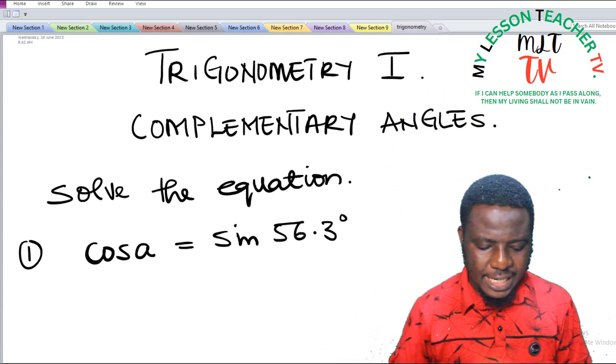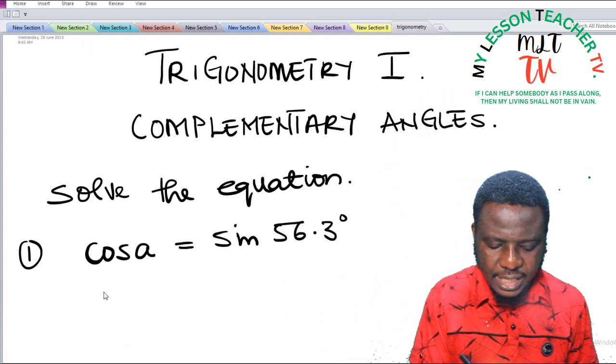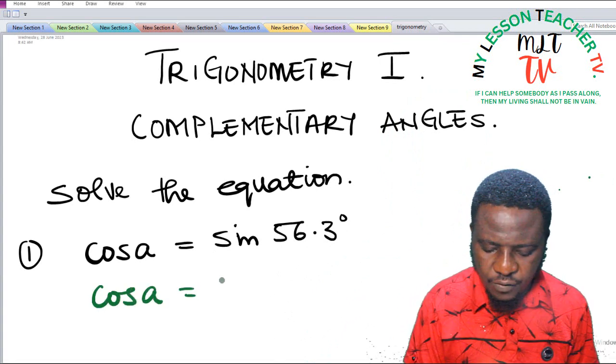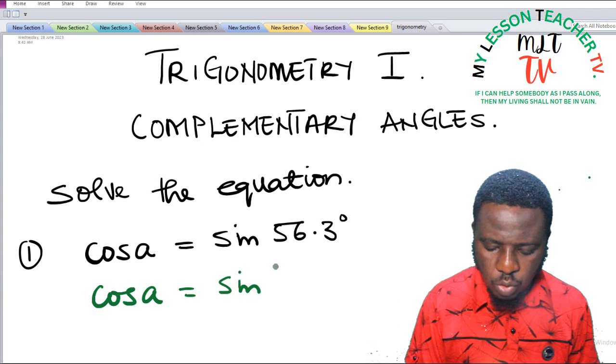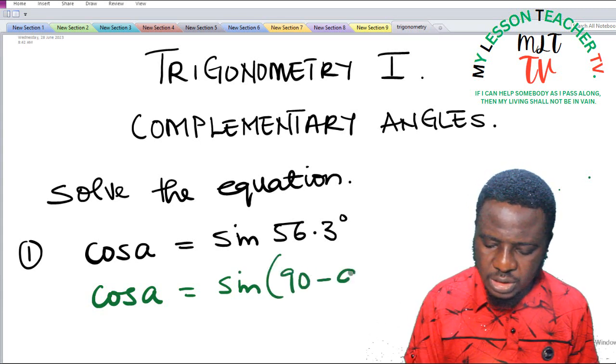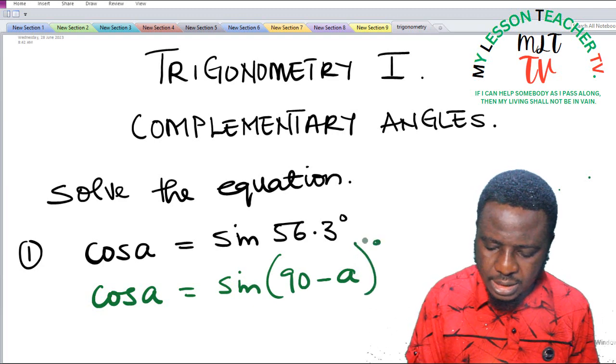Using the trig identity, we have already established that cos A is given to be equal to sine of 90 minus A degrees.